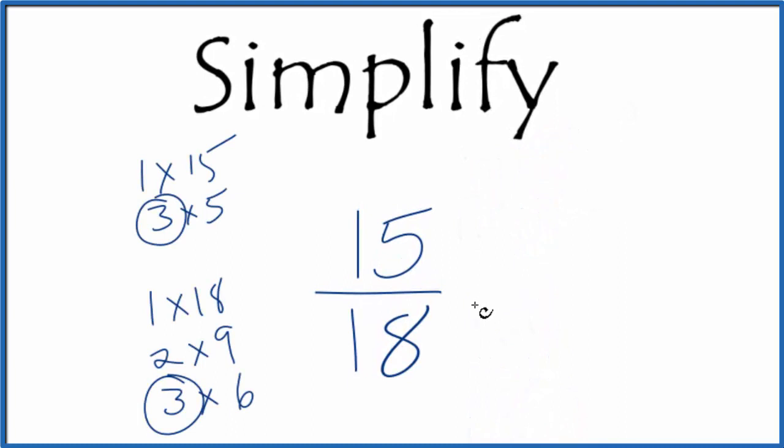So 15 divided by 3, that's 5. 18 divided by 3, that's 6.